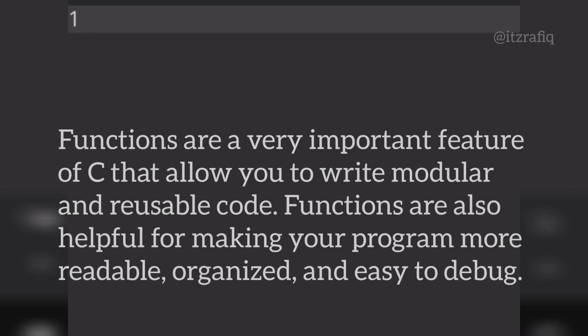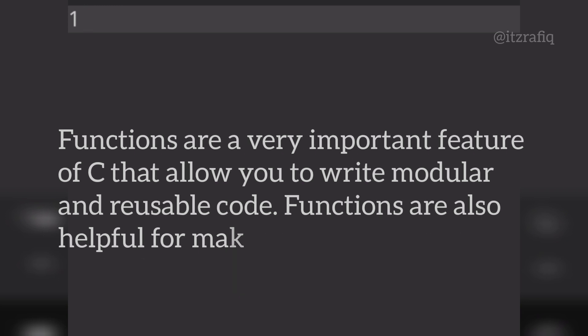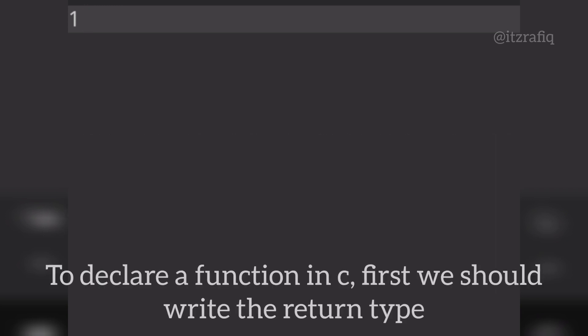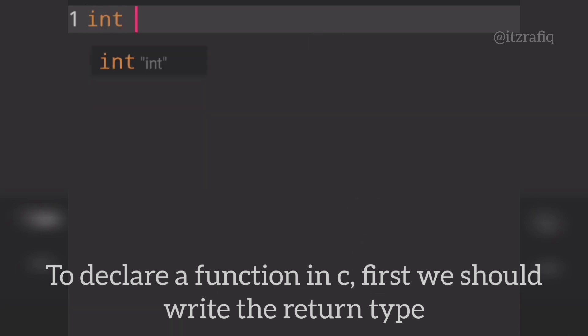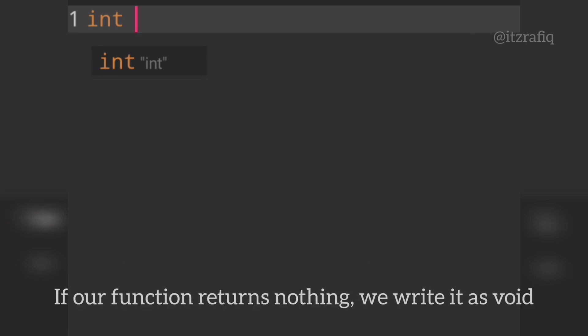I will declare a function in the program. When you declare a function, you first write the return type. The return type can be integer, character, float, or even void. If the function returns an integer value, then it will be int. If the function returns nothing, then it will be void.